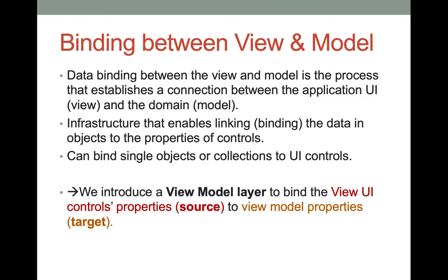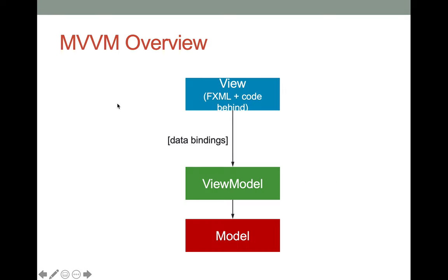We establish connections between the application UI and the domain model using bindings. The view model layer creates bindings between UI control properties — the source of data — and view model properties — the target. In the abstract structure: the view (fxml plus code-behind) has data bindings with properties in the view model, and the view model manipulates the methods of the model. The view and model are completely separated — the view model manipulates the model, and the view manipulates the view model.